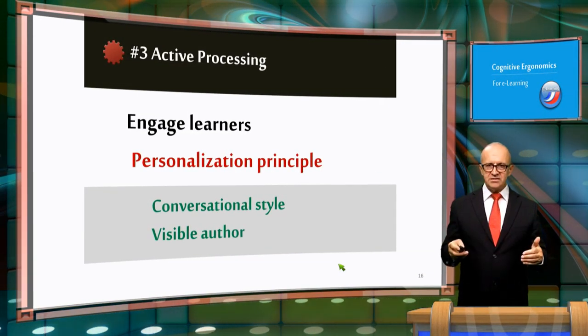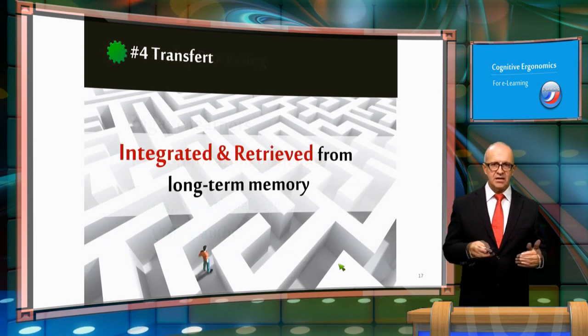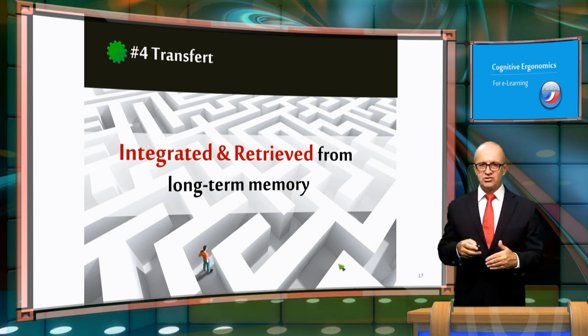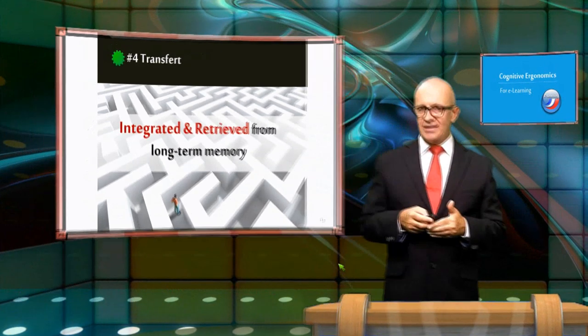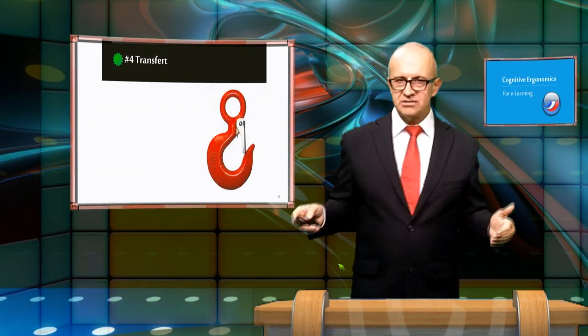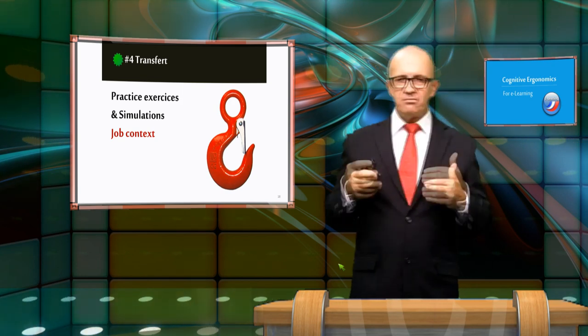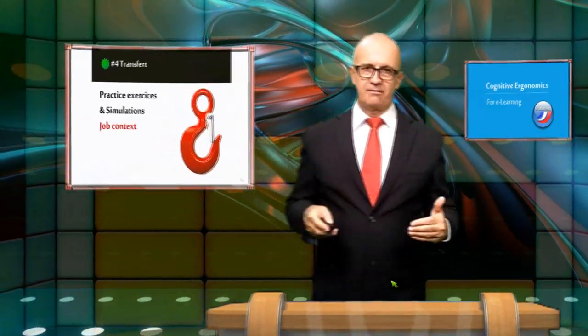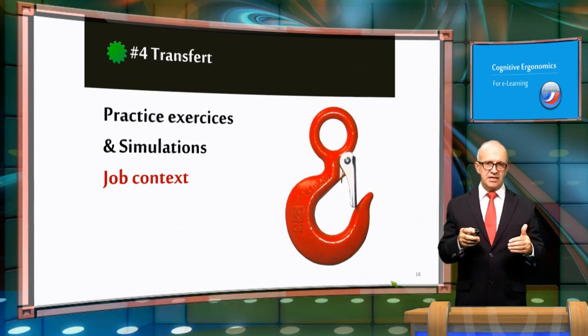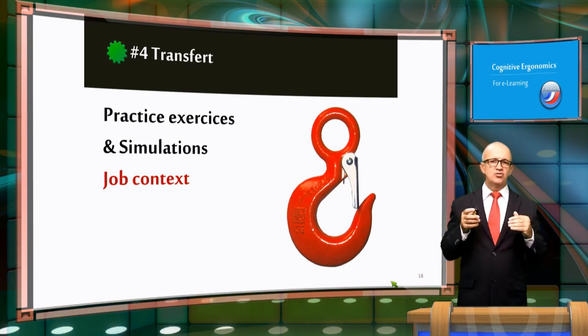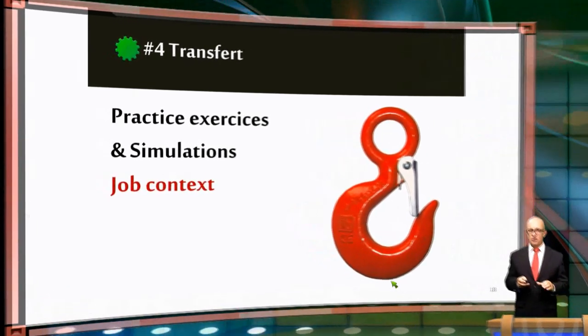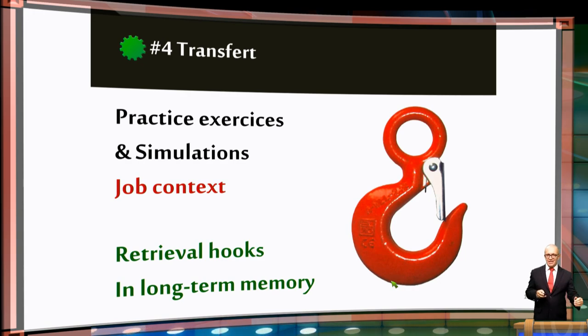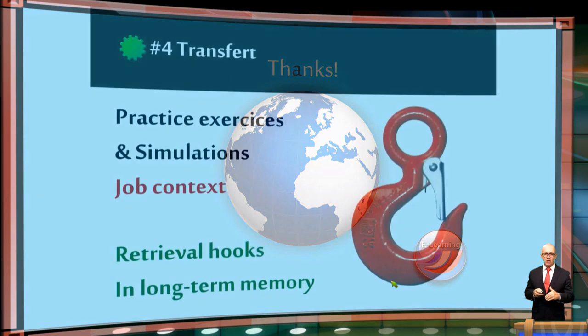The fourth principle is that new knowledge and skills must be well integrated and retrieved from long-term memory during performance. Practice, exercises, and simulations based on job context are the best methods to integrate new knowledge and skills with the existing knowledge. The job context is extremely important because it will include retrieval hooks in the long-term memory. These retrieval hooks help learners to easily retrieve skills and knowledge when needed on the job.